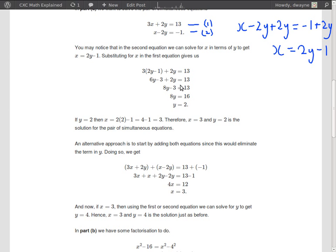I added 3 to both sides here to get rid of the 3. Minus 3 plus 3 is 0, so I get 8y on this side alone. I add 3 to the other side, so I get 13 plus 3 equals 16. And then y equals 2 because I divide by 8 on both sides. 16 divided by 8 is 2.